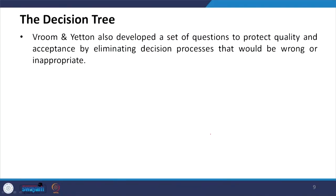Vroom and Yetton also developed a set of questions under the decision tree to protect the quality and acceptance by eliminating decision processes that would be wrong or inappropriate. Decision quality is determined by acceptance, and any inappropriate or wrong process must be eliminated.